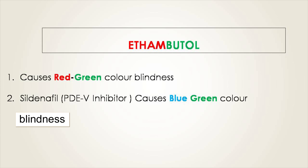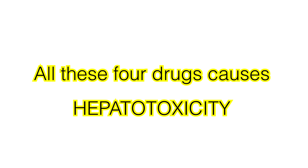Ethambutol causes red-green color blindness. For comparison, sildenafil — a phosphodiesterase-5 inhibitor — causes blue-green color blindness. So we have two drugs causing color blindness: ethambutol causing red-green color blindness, and sildenafil causing blue-green color blindness.